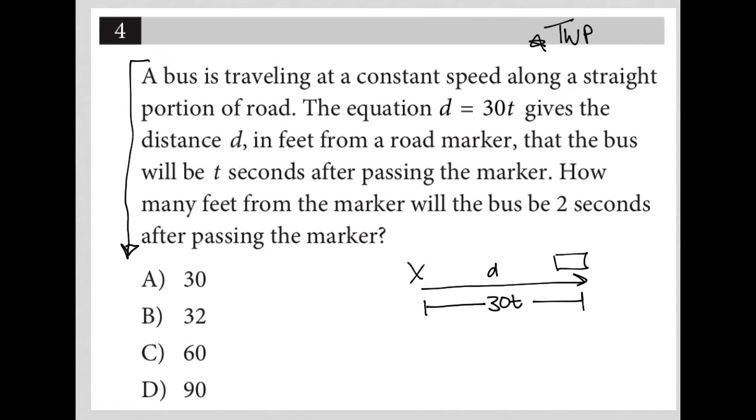And then it goes on to say how many feet from the marker will the bus be two seconds after passing the marker? Oh, so it's basically just saying that t equals two, which makes this a plug-in information from question type of strategy, where I'm just going to plug that two in.